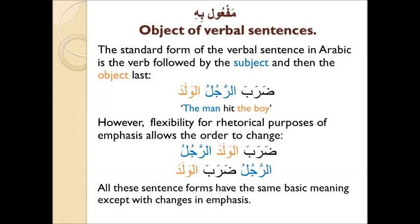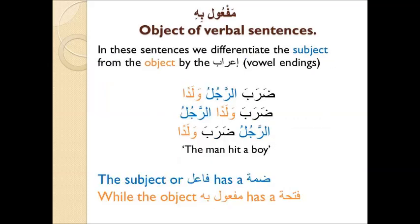The standard form of the verbal sentence in Arabic is the verb followed by the subject and then the object last, as in: ضرب الرجل الوالد — the man hit the boy. However, flexibility for rhetorical purposes of emphasis allows the order to change, such as ضرب الوالد الرجل or الرجل ضرب الوالد. All these sentence forms have the same basic meaning, except with changes in emphasis.